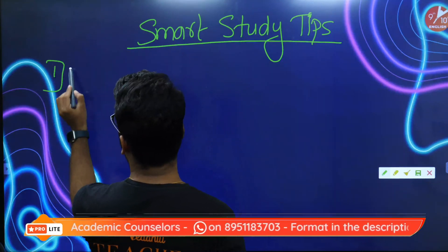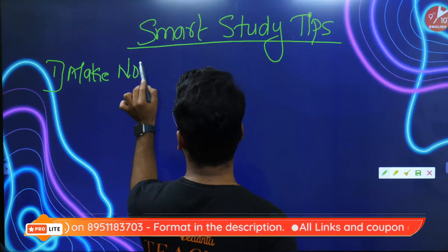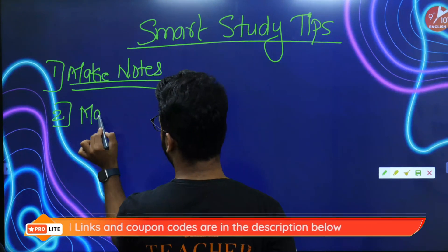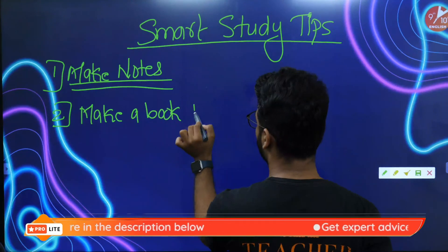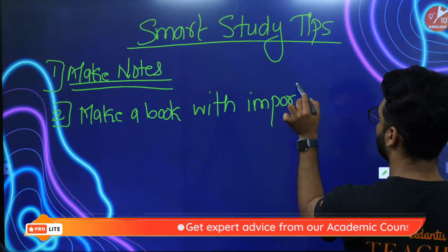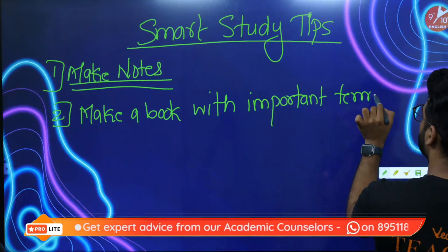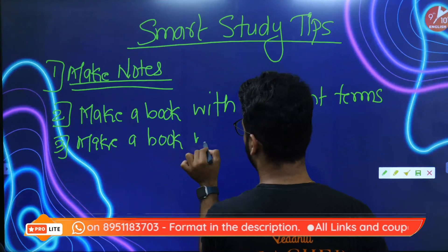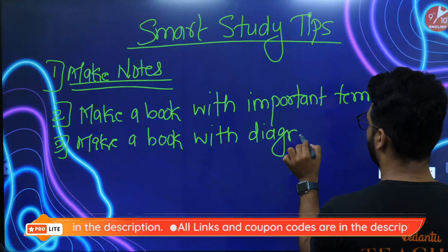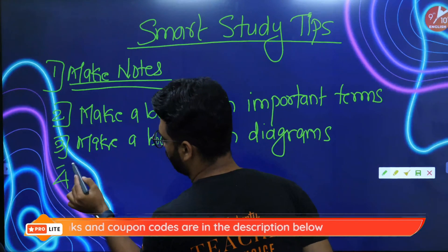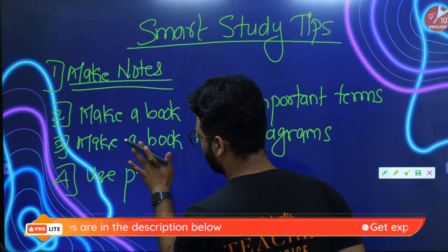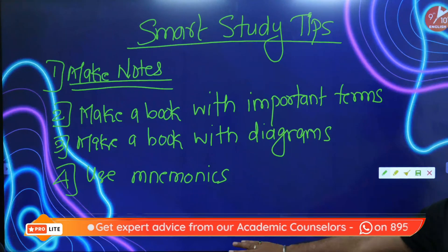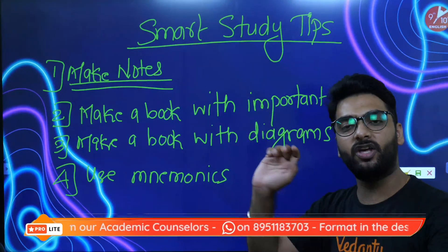Here are four tips and your biology is sorted. Number one: make notes. Number two: make a book with important terms. Number three: make a book with diagrams. Number four: use mnemonics. These are the four tips and your biology is sorted.